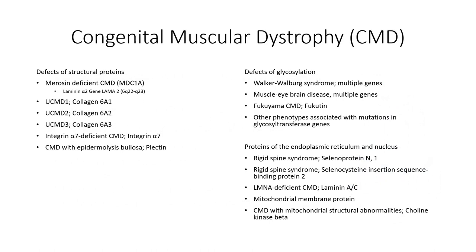The accompanying slide provides a proposed classification system for many of the CMD variants identified. This is not posted for memorization, but to give a perspective on the number of gene mutations that can be classified as congenital muscular dystrophies and the variability in these mutations. Collectively, a total of 4.7 cases of CMD would be expected in a population of 100,000 globally, which would suggest a little over 40 individuals in a city the size of Metro Buffalo are presently living with this condition.